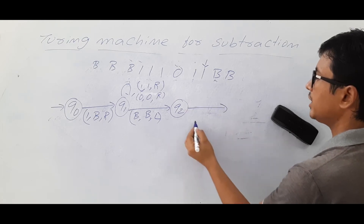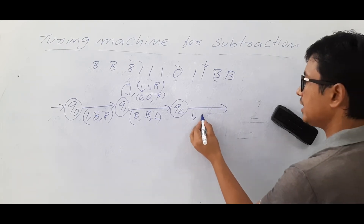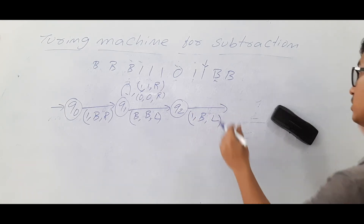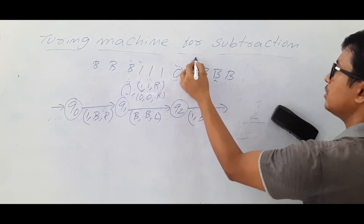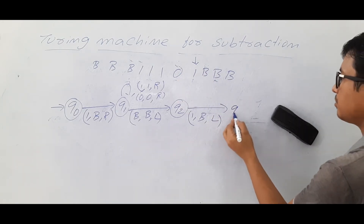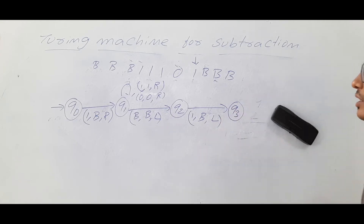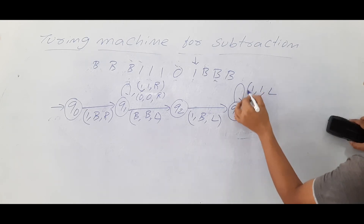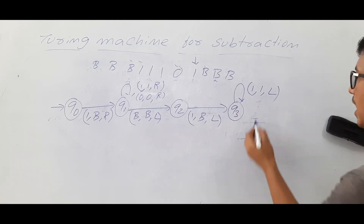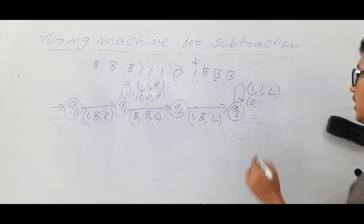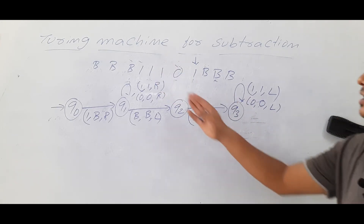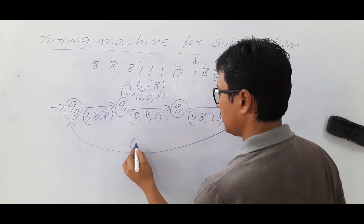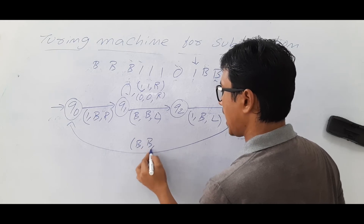In state q2, if I see a 1 I make it a blank and move to the left, reaching state q3. In state q3, any number of 1s I keep as 1 and move left; if I see a 0 I keep it as 0 and move left. I continue until I get a blank, keep it as a blank, and move to the right.